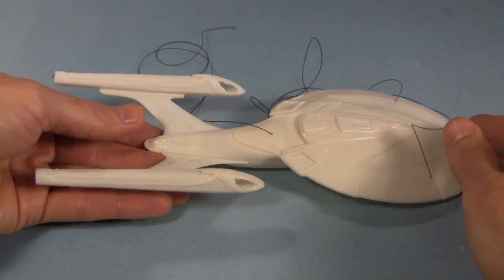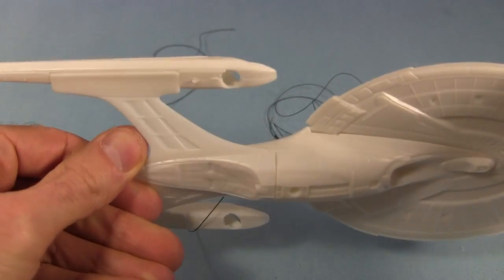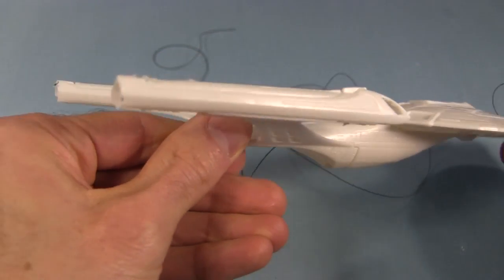Here's how I made the modifications. You can see the holes in the front of the nacelles, and the cut off back.